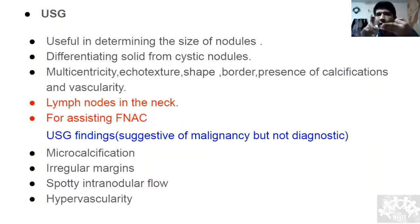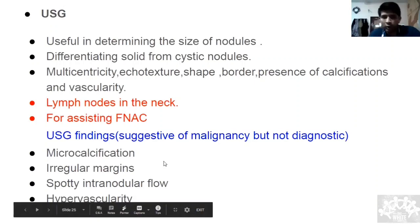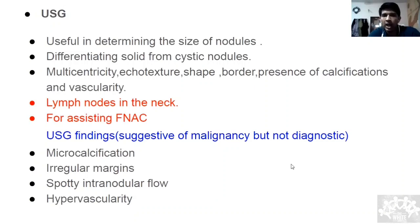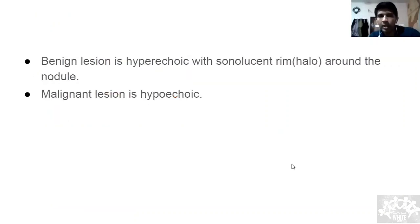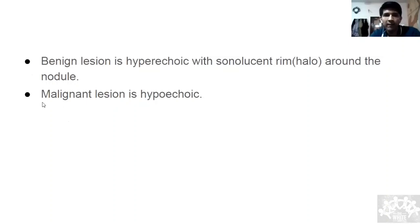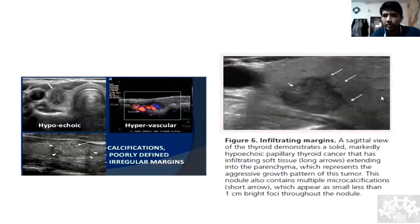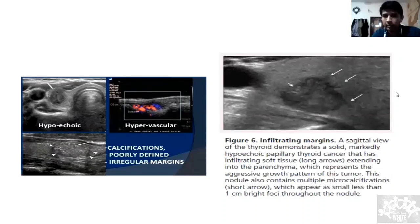Findings suggestive of malignancy on ultrasound: presence of microcalcification, irregular margins, hypervascularity, spotty internodular flow. Regarding echogenicity — benign is hyperechoic (follicles are functional), malignant is hypoechoic (lesion is not functional). Images demonstrate hypervascular lesions with tiny calcifications and hypoechoic appearance.